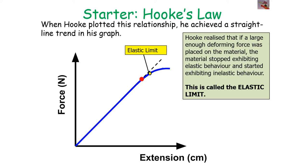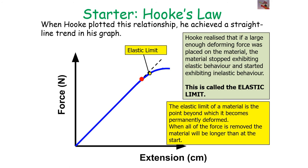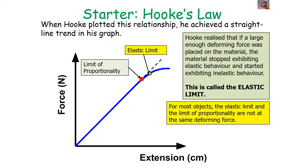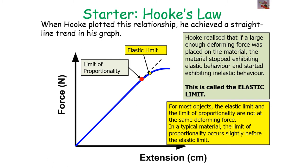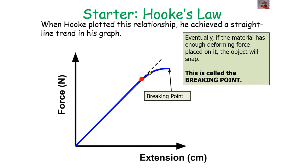Hooke also realized that if a large enough deforming force is placed on the material, it stops exhibiting elastic behavior and starts exhibiting inelastic behavior. The point at which this occurs is called the elastic limit — the point beyond which the material becomes permanently stretched or permanently deformed. When all force is removed beyond the elastic limit, the material will be longer than it was at the start. For most objects, the elastic limit and the limit of proportionality are not at the same deforming force — the limit of proportionality occurs slightly before the elastic limit. Eventually, if enough deforming force is applied, the object will snap, which is called the breaking point.